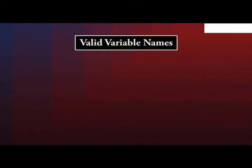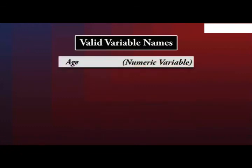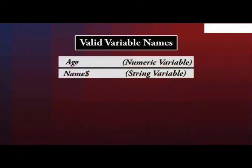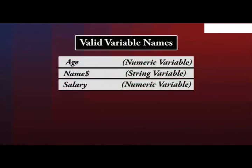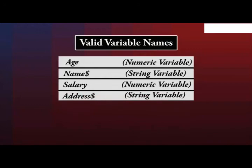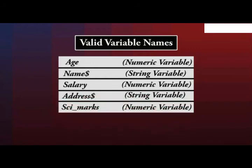Some valid variable names are age numeric variable, name dollar string variable, salary numeric variable, address dollar string variable, SCI underscore marks numeric variable.